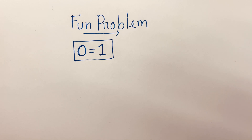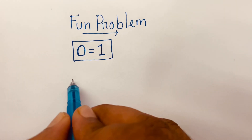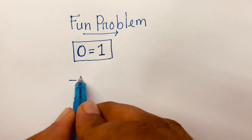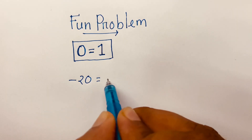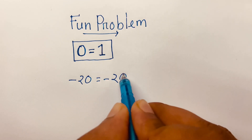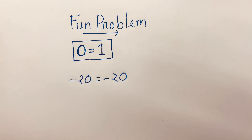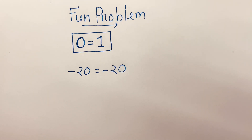Hello everyone, it is a fun problem. We have proved 0 is equal to 1, but how? Your task is to find my mistake.